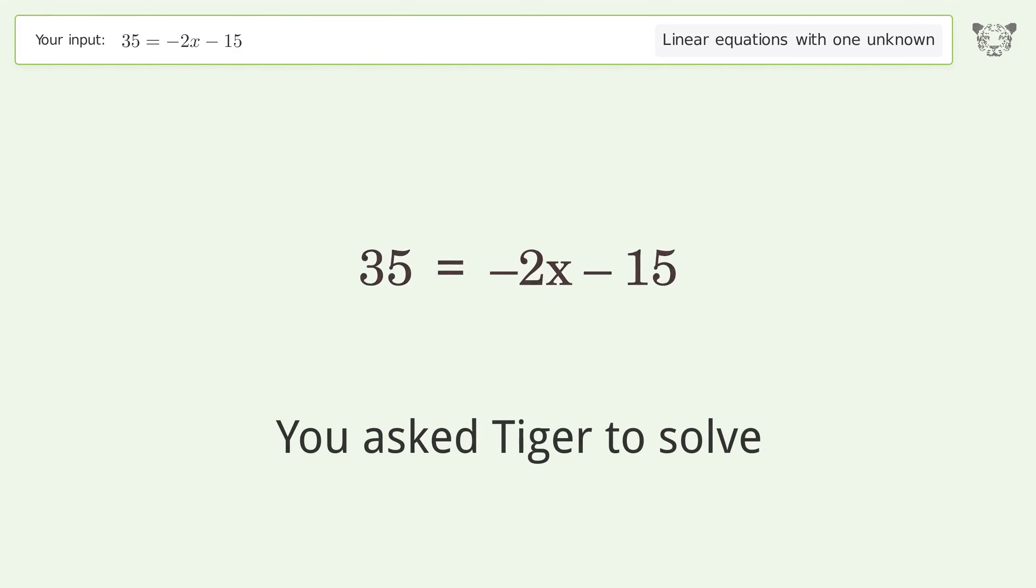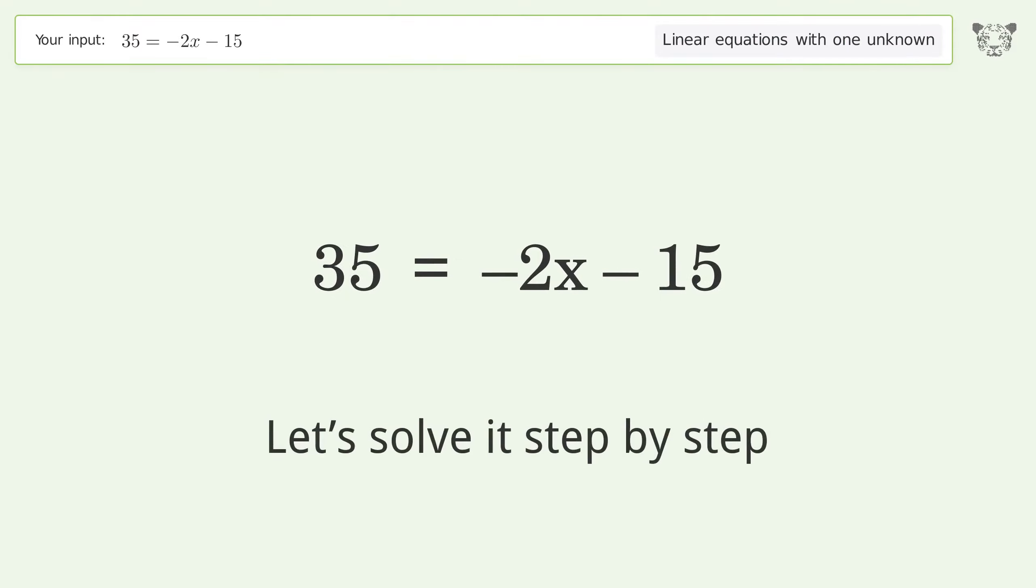You asked Tiger to solve this. It deals with linear equations with one unknown. The final result is x equals negative 25. Let's solve it step by step. Swap sides.